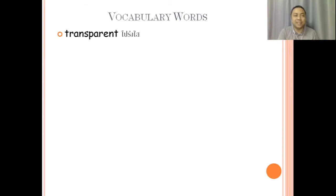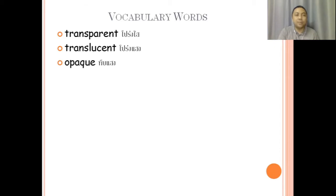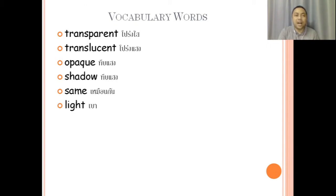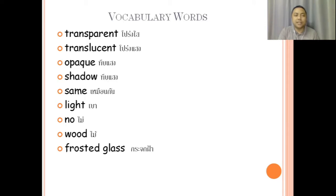Vocabulary words — please repeat after me. Transparent. Translucent. Opaque. Shadow. Same. Light. No. Wood. Frosted glass. Air. Material.